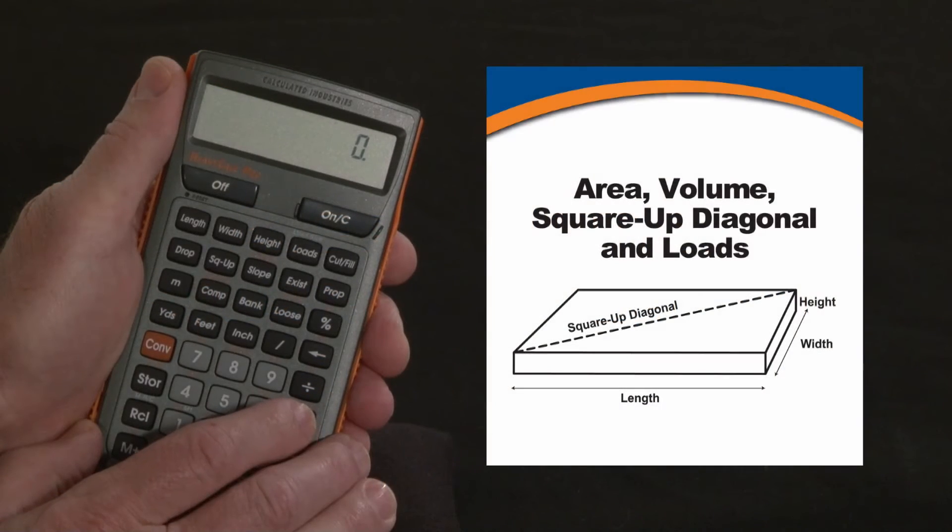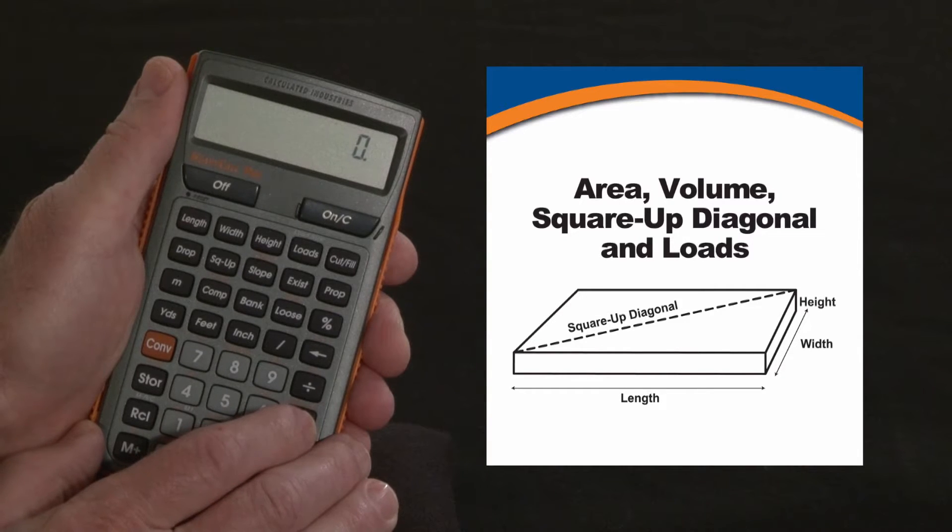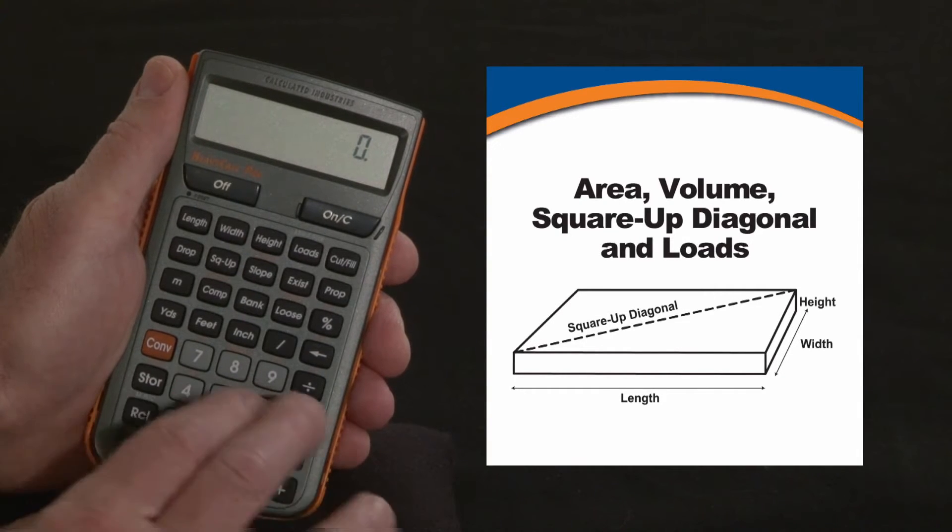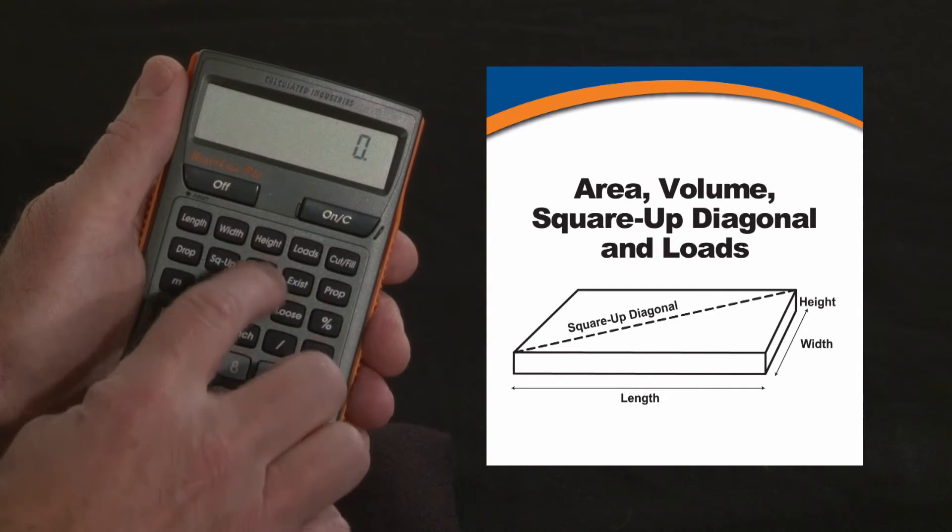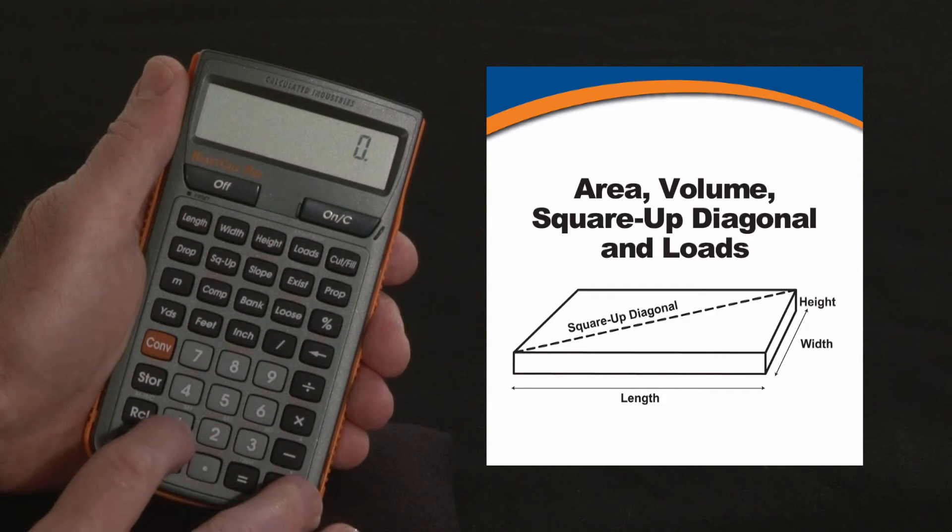Now let me show you how to calculate areas, volume, square ups, and diagonals, and loads on your heavy calc. You can always do it the mathematical way, multiplying those three dimensions together, or you can use these top three keys here to get a whole series of answers from just three inputs. Let me show you.